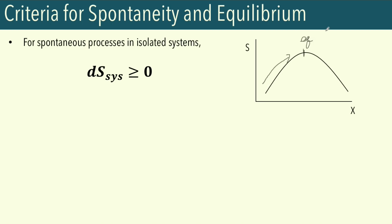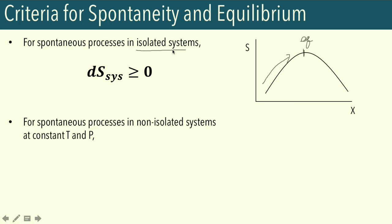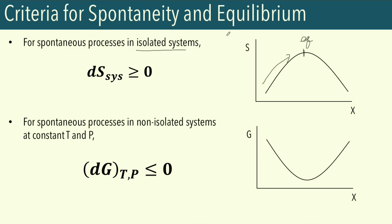However, as discussed previously, the use of entropy as a criterion for spontaneity can only be applied if we have an isolated system, which is not the case for many processes of interest. Therefore, we derived from the Clausius inequality another criterion for spontaneity applicable at constant temperature and pressure conditions — our Gibbs free energy. For irreversible spontaneous processes, the Gibbs free energy will decrease until it reaches a minimum, which corresponds to the equilibrium state. Since temperature and pressure are held constant, Gibbs free energy is the most convenient criterion for spontaneity.